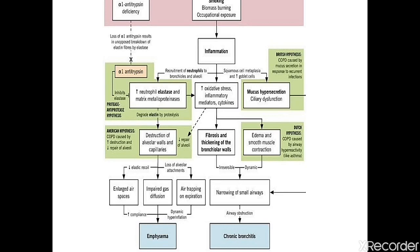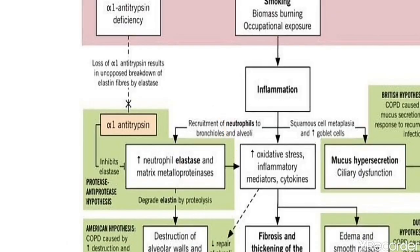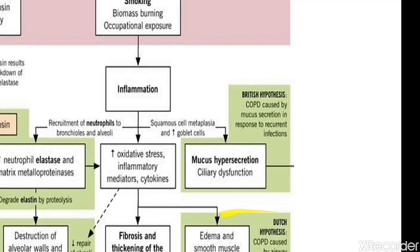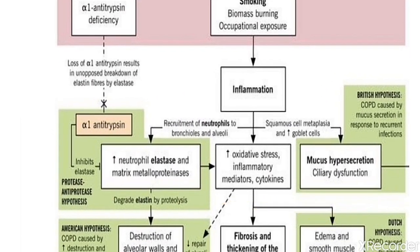Regarding pathogenesis of COPD — emphysema is caused by two main causes: alpha-1 antitrypsin deficiency and smoking. Loss of alpha-1 antitrypsin results in unopposed breakdown of elastic fibers by elastase. Elastase is an enzyme that breaks down collagen fibers and elastic fibers in the lungs.